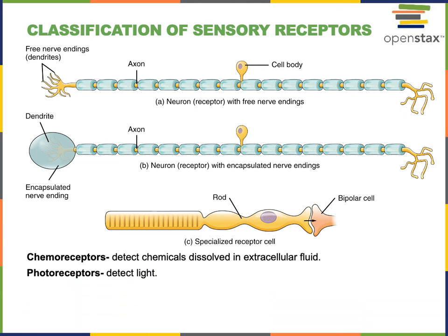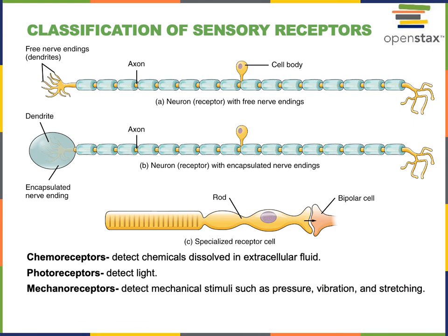Photoreceptors are sensory receptors that respond to light, and the rods and cones of the retina are the photoreceptors that enable vision. Mechanoreceptors are sensory receptors that respond to a physical stimulus such as pressure, vibration, or stretching. The somatosensory receptors that enable the sense of touch are mechanoreceptors, and other examples include the auditory hair cells of the inner ear that enable audition, commonly known as the sense of hearing.